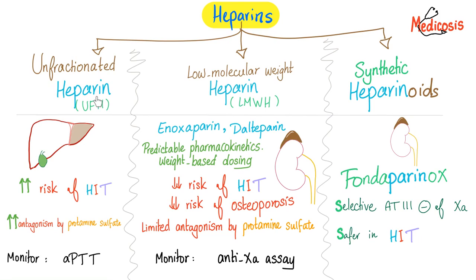How do we monitor the unfractionated heparin? Since it stimulates antithrombin 3 to inhibit factors 9, 10, 11, 12, and then 2 and 7, the intrinsic pathway is gone — you can monitor it using PTT. Do not use PTT for the low molecular weight heparin because it did not touch the intrinsic pathway. Low molecular weight heparin — enoxaparin and dalteparin — are excreted through the kidney. Therefore, if the patient has kidney failure, low creatinine clearance, low GFR, or high creatinine in the blood — all of these mean kidney failure — do not give low molecular weight heparin. Also, do not give fondaparinux for the same reason — excreted in the kidney.